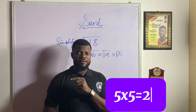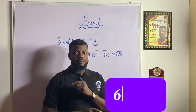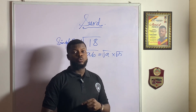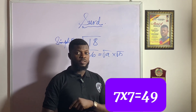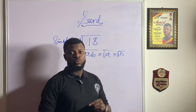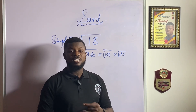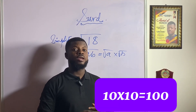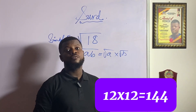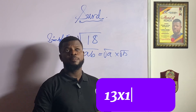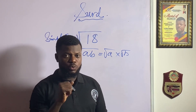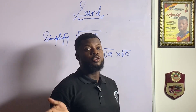5 times 5 is 25. Please keep following up to 13. 6 times 6 is 36, so 36 is a perfect square. 7 times 7 is 49, so 49 is a perfect square. 8 times 8 is 64, so 64 is a perfect square. 9 times 9 is 81, so 81 is a perfect square. 10 times 10 is 100, so 100 is a perfect square. 11 times 11 is 121, so 121 is a perfect square. 12 times 12 is 144, so 144 is a perfect square. 13 times 13 is 169, so 169 is a perfect square.